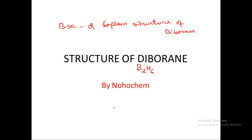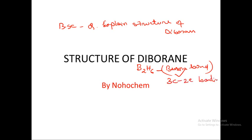Diborane is also called a banana bond compound. Inside diborane you have a banana bond, and it has 3-center 2-electron bonding. Two-center two-electron bonding is seen in this structure, so this thing you have to keep in mind.